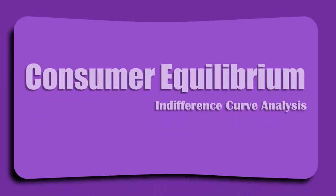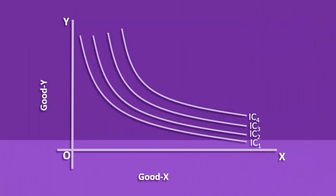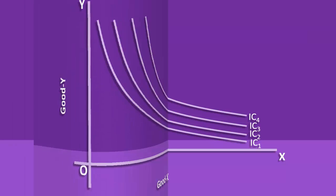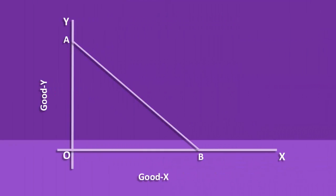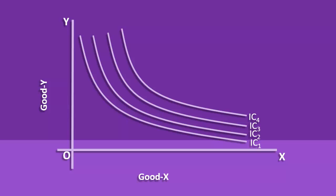Consumer Equilibrium in Terms of Indifference Curve Analysis. The two tools we are going to use in this connection are Indifference Map and Budget Line. The Indifference Map exhibits the consumer's scale of preference for various combinations of two goods, say Good X and Good Y.